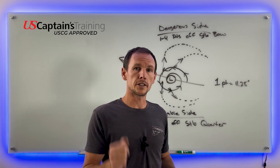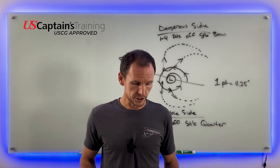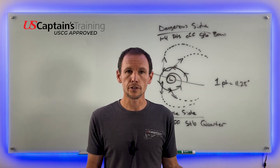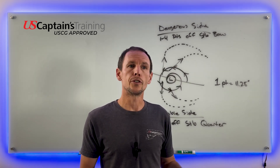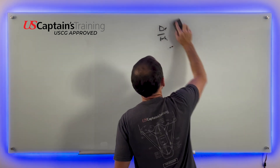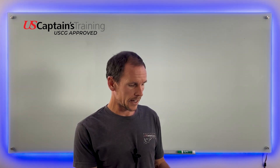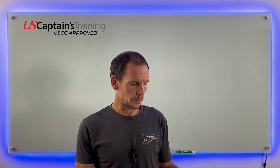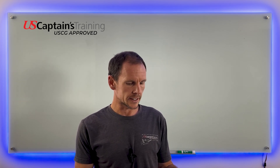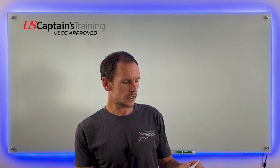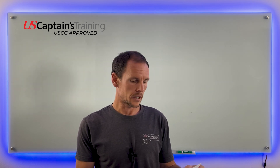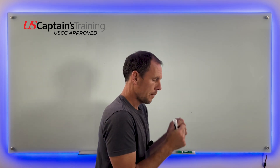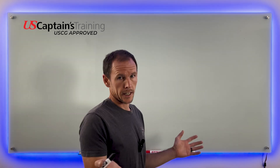Now there are practice questions about Buys Ballot's law. Let's solve a couple so you know what to expect on the quiz. Practice problem one: according to Buys Ballot's law, an observer in the northern hemisphere who experiences a northeast wind has the center of low pressure to the east, southeast, south, or southwest? We know how to find it — back to the wind, to your left.